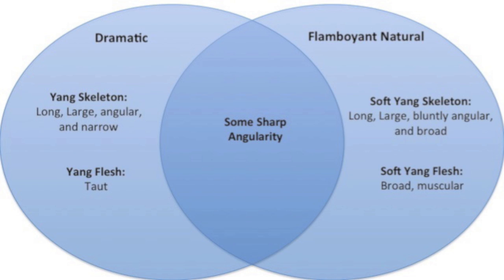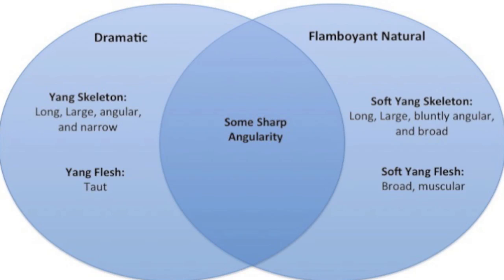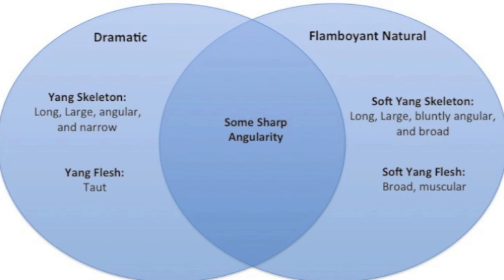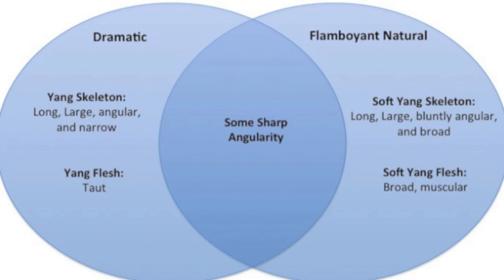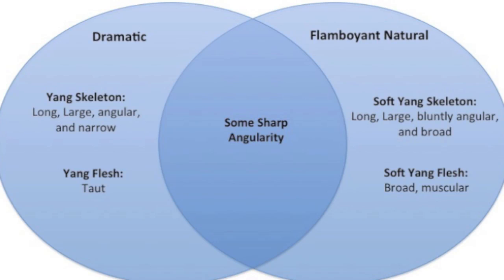So what can Keira do if she really wants to make her body appear more dainty? In my opinion, Keira can try wearing some flamboyant natural lines. It may not be intuitive, but here's the reasoning: dramatic and flamboyant natural share some sharp angularity. Dramatic has more sharpness, but that shared sharp angularity means the flamboyant natural lines won't look too separate from Keira.